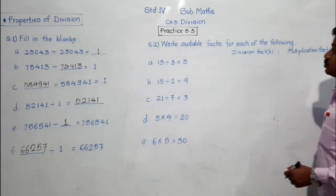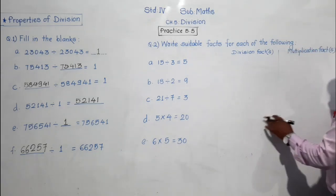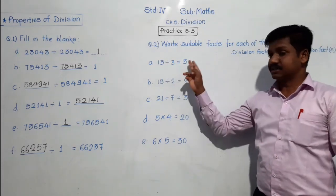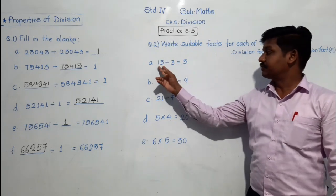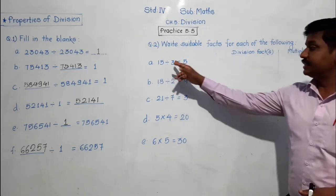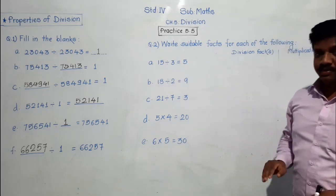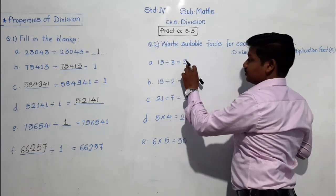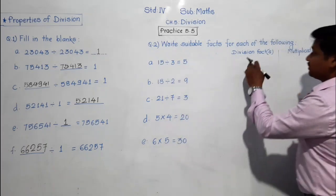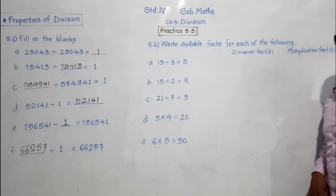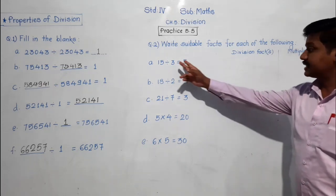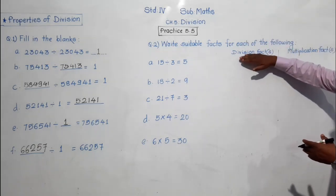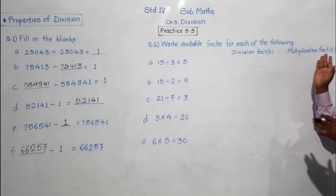See the second question: write suitable facts for each of the following. Facts means: they have given a division sum, for example 15 divided by 3 equals 5. From this one example, we can write another division fact and also a multiplication fact. The same example can be expressed in another form as division, and in another form as multiplication.